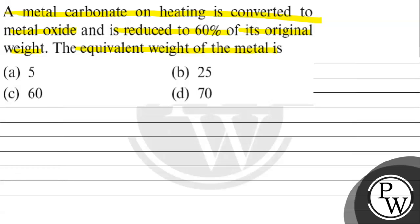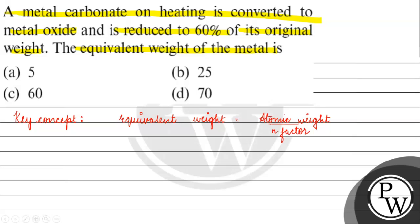The key concept for this question is: equivalent weight equals atomic weight divided by n-factor. For charged species, for example iron as Fe⁺, the n-factor is 1. If we have an ion like B²⁻, the n-factor is 2.